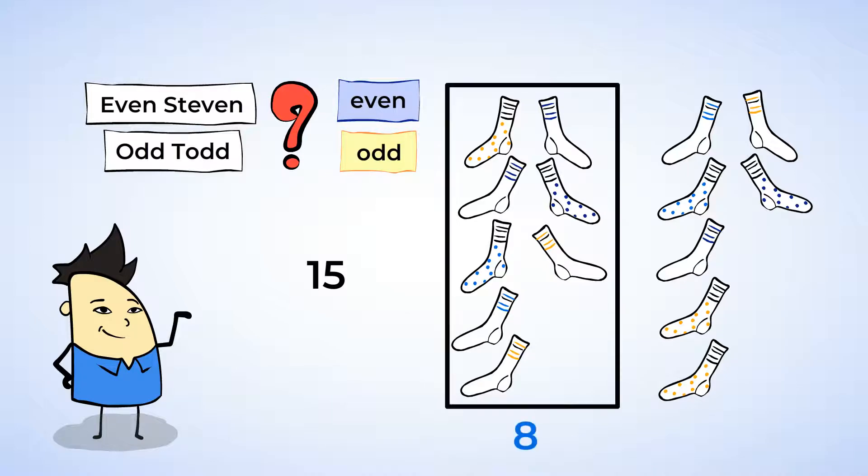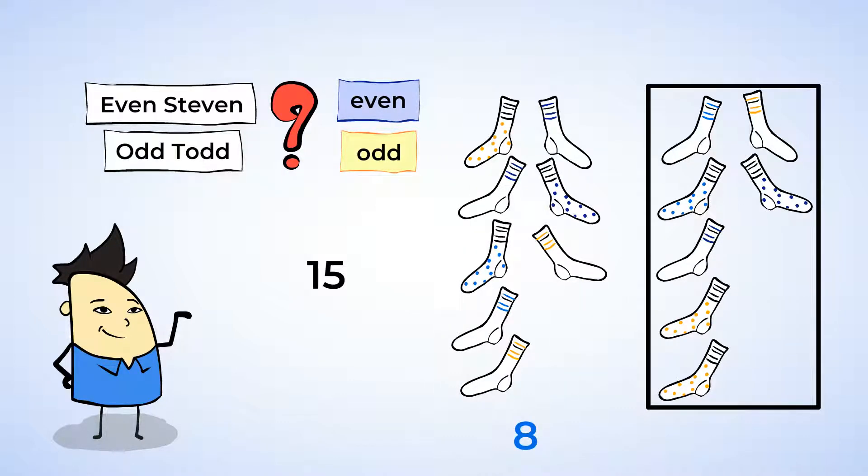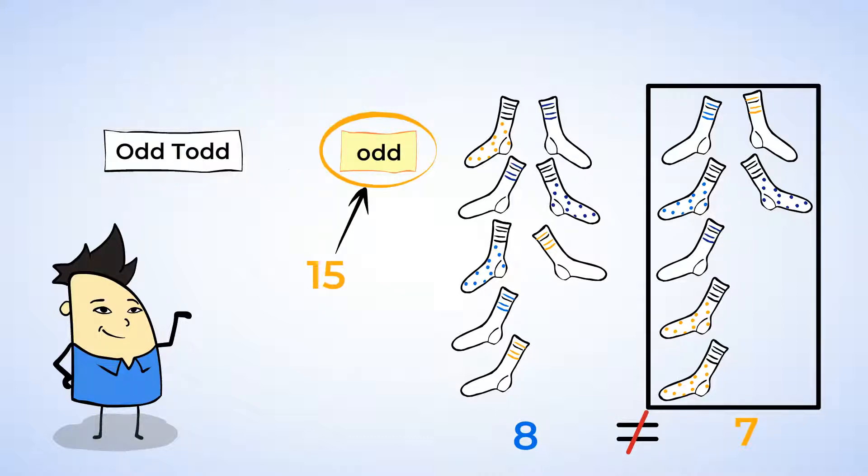Okay, let's see. This group over here has eight socks and this group only has seven. So, it seems like you can't split 15 into two equal groups. So, the number 15 must be Odd. These socks must belong to Odd Todd.